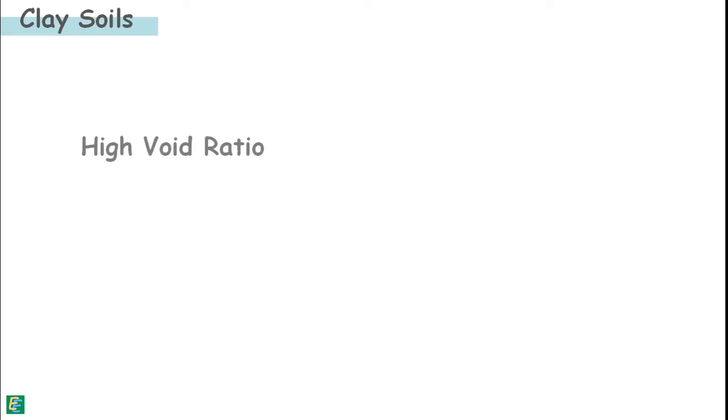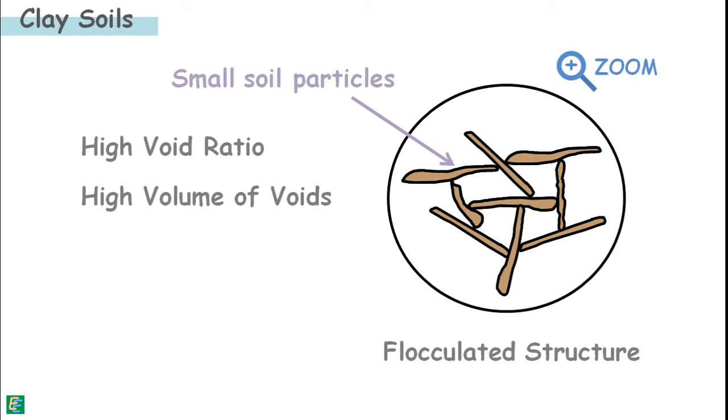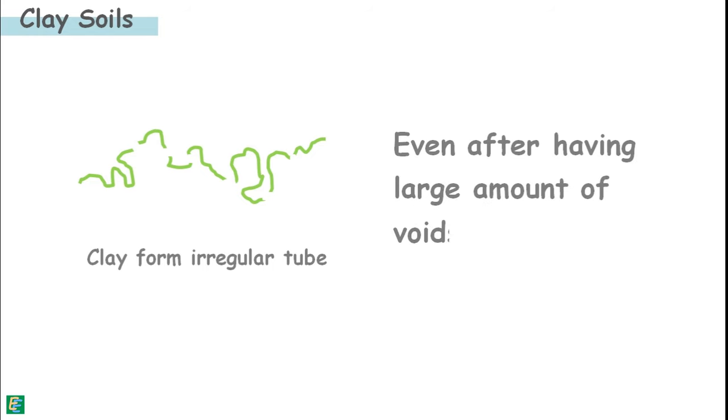Clay soils have high void ratio as they have large volume of voids because of their flocculated structure. These voids look very large, but it is a much zoomed view. And because the clay particles are very small, these voids are poorly connected to each other and do not form a regular tube or channel-like structure. Hence even after having large amount of voids, clay soils are very less permeable.